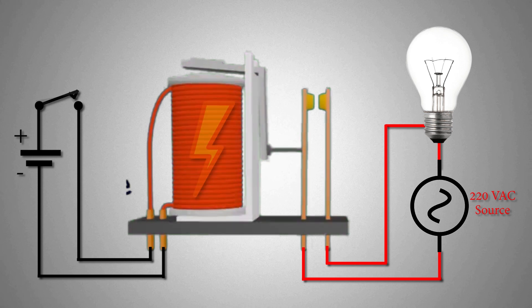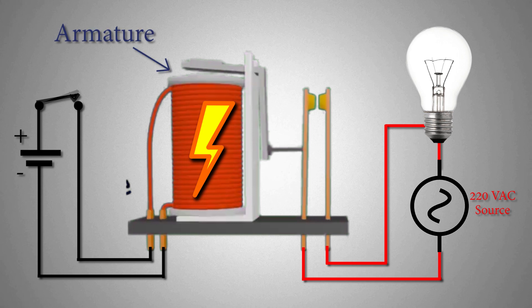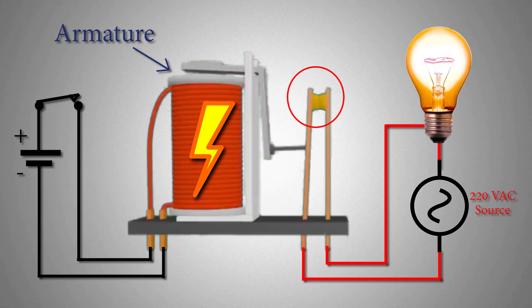When this push button is pressed, it applies the voltage to the relay coil. The relay coil gets energized and becomes an electromagnet. This electromagnet attracts the armature towards it and the relay normal open contacts move towards each other and close.